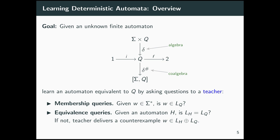There are two types of questions we are allowed to ask the teacher. The first is a membership query: given some input word w, does it lie in the language of Q? The second is an equivalence query: given some hypothesis automaton that we think might be the right one, we ask if it is actually equivalent to Q. If yes, then we have found the correct model. Otherwise, the teacher gives us a counterexample — some word that is accepted by one of the two automata but not by the other.